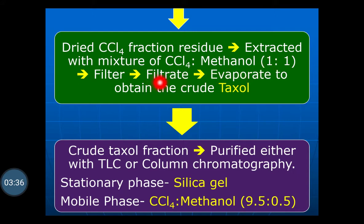The filtrate is filtered and evaporated to obtain a crude taxol. This residue contains taxol but in crude form. For further purification, the crude taxol fraction is purified either by thin layer chromatography or column chromatography, using silica gel as the stationary phase and carbon tetrachloride:methanol (9.5:0.5) as the mobile phase to obtain purified taxol.